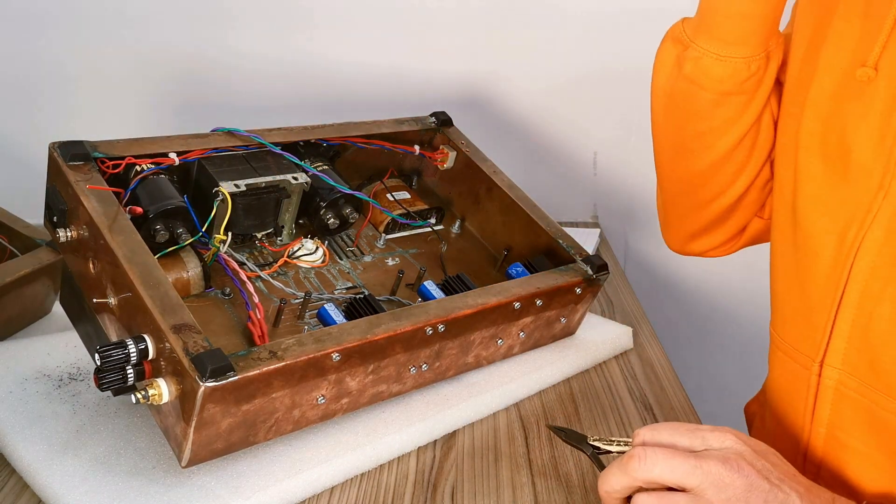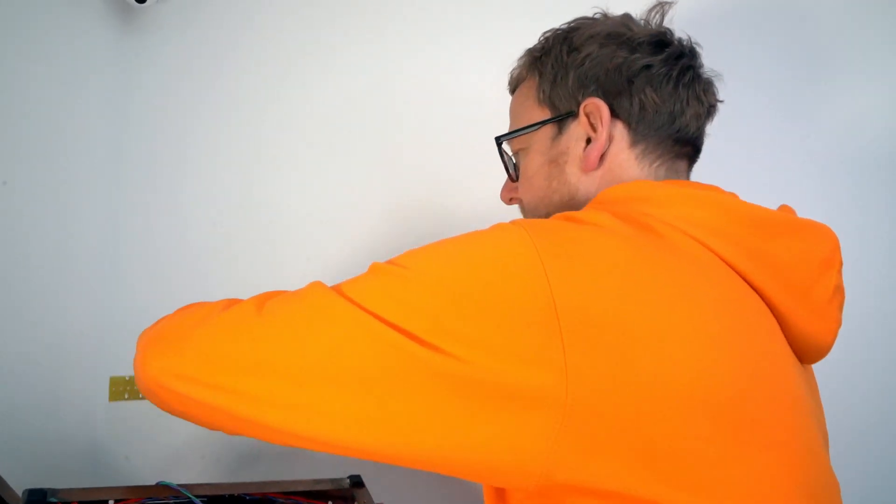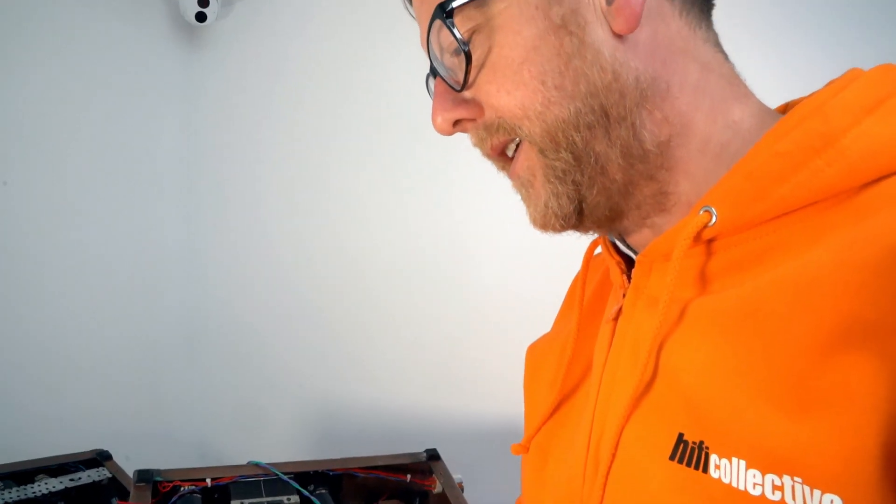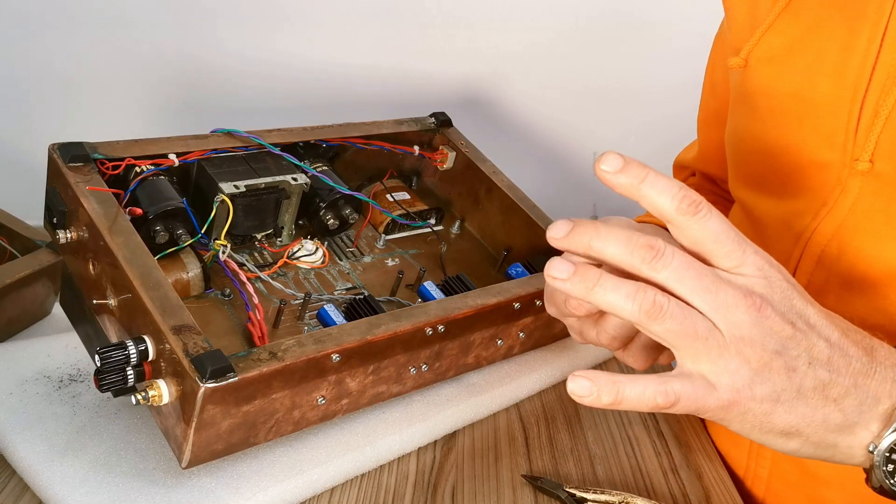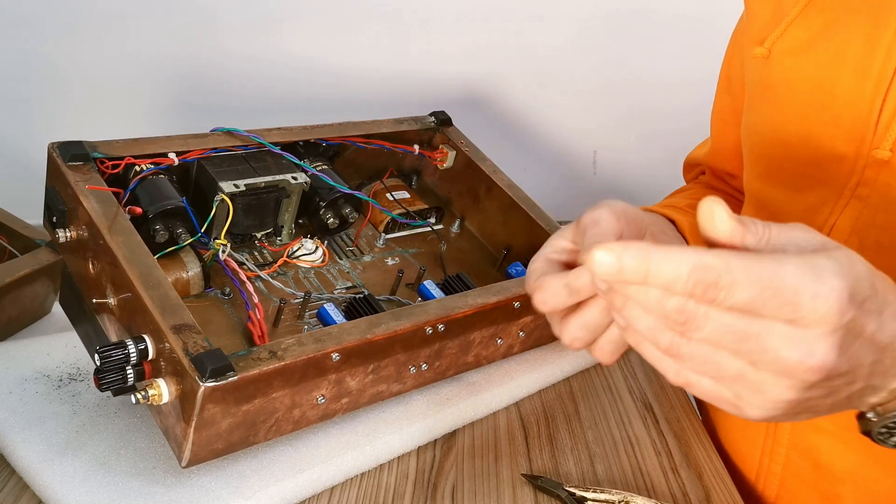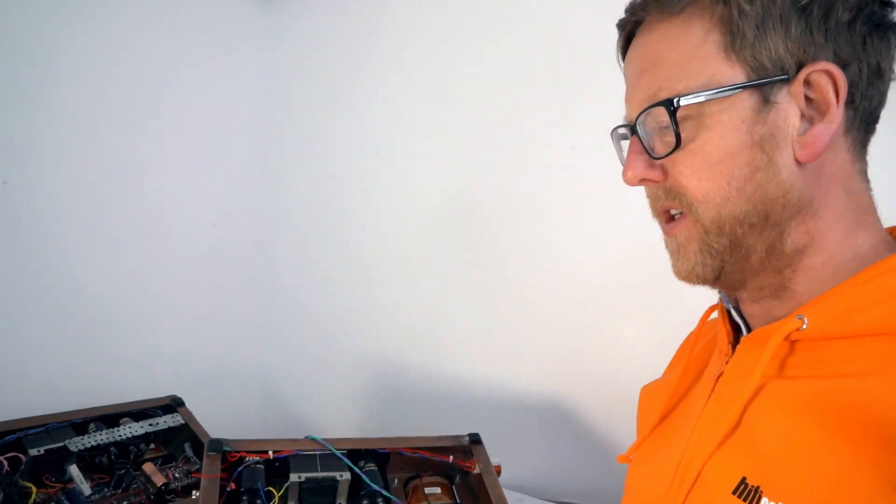So what we're doing now before we put the tag boards on which are here, I'm just going to solder these in. So these sit on the heaters of the 300Bs and they form part of the cathode because it's a direct heated tube, so the cathode sits on the heaters as well as the heaters that generate the electrons for conducting electricity.